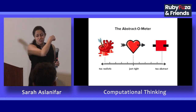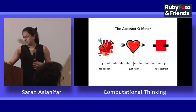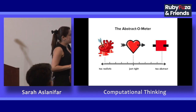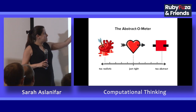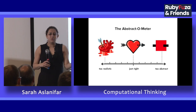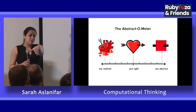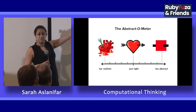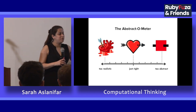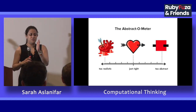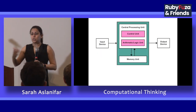I absolutely love this picture — it's called the abstractometer by Christoph Niemann. What he's trying to show is that when your models are too realistic, it just takes away from the meaning you really need. And when you put too many abstractions, it doesn't mean anything. So somewhere in between is when there are enough abstractions for you to focus on the job and also learn the tools you're using.